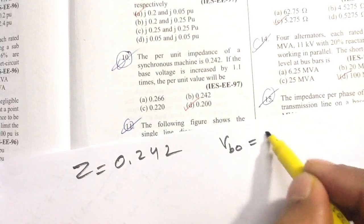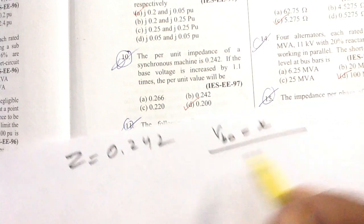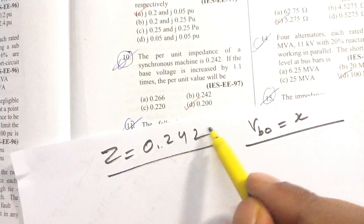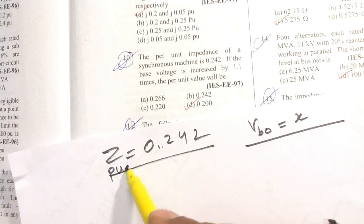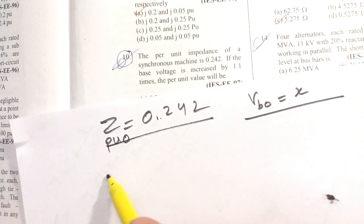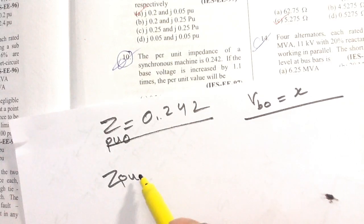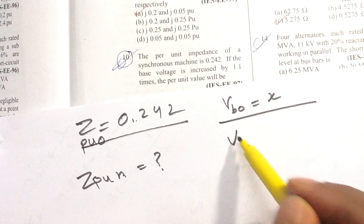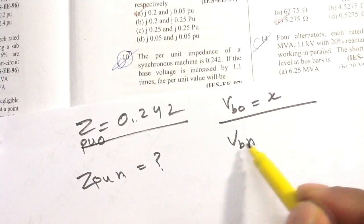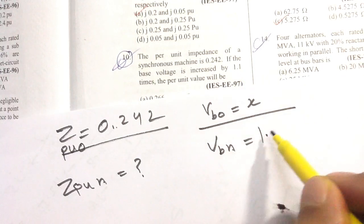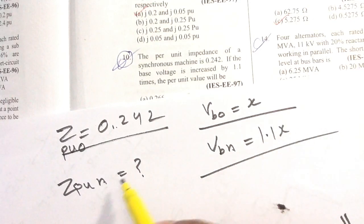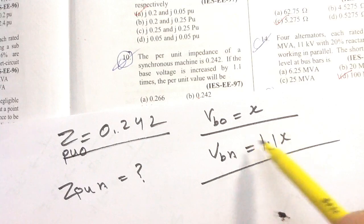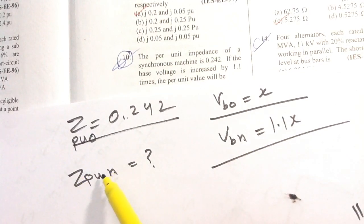Let the old base voltage be x. Then the per unit impedance on the old base is 0.242 — this is the old per unit value. We need to find the new per unit impedance on the new base voltage which is 1.1x.